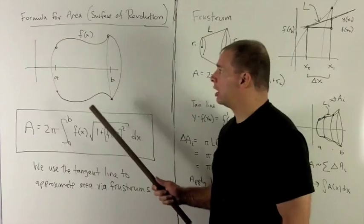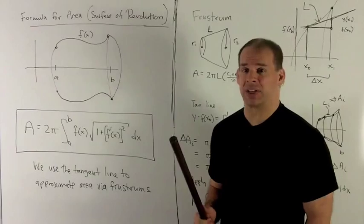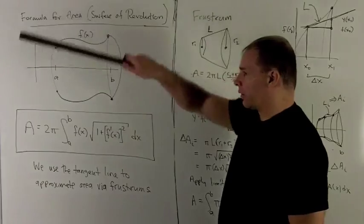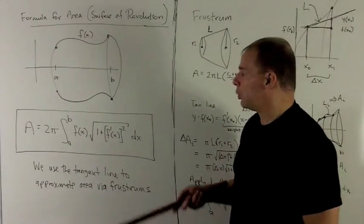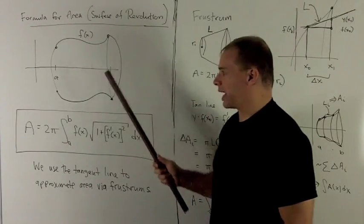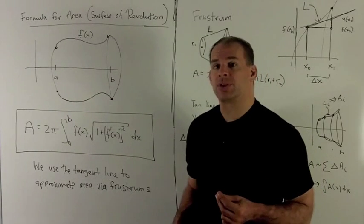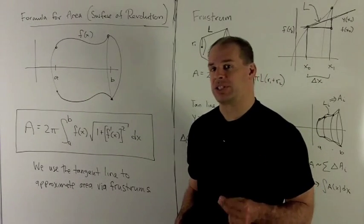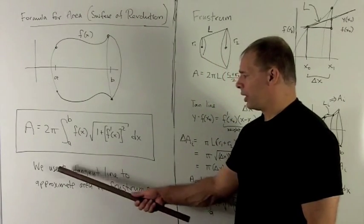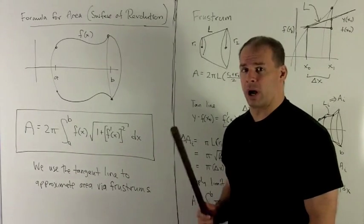The only case I'm going to consider is where our function is completely above the x-axis, so F is positive. I'm also only going to consider rotating around the x-axis — we could consider other axes of revolution, but we'll just stick with the x-axis for now. Before we get to examples, let's try to derive this just to get an idea of what's going on. I'm going to use tangent lines to approximate the area by way of frustrums.